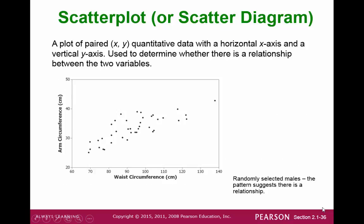Let's start with some good graphs. A scatterplot is a type of graph where you plot paired data. In this particular example, we can take a look at a waist circumference and an arm circumference for a randomly selected male, and we can check this scatterplot to see if we can find a particular pattern.